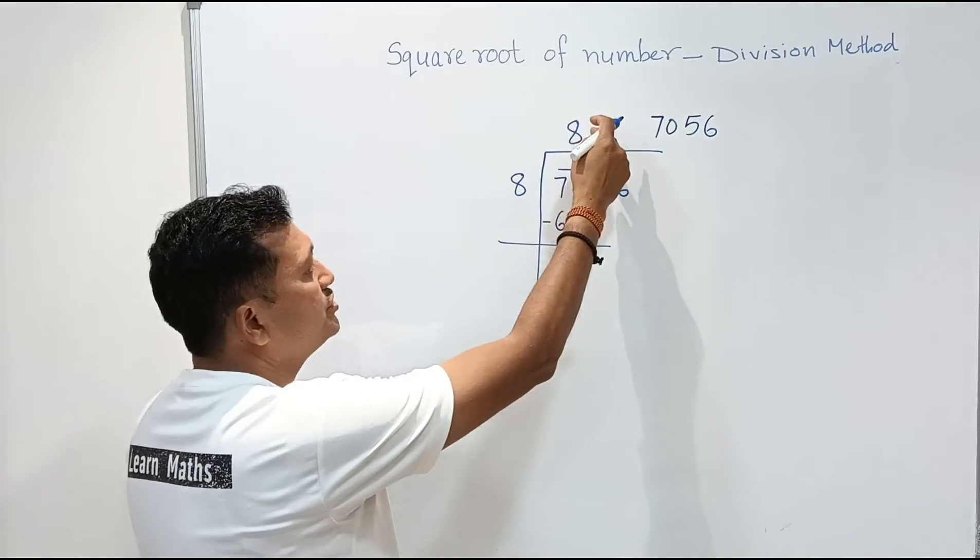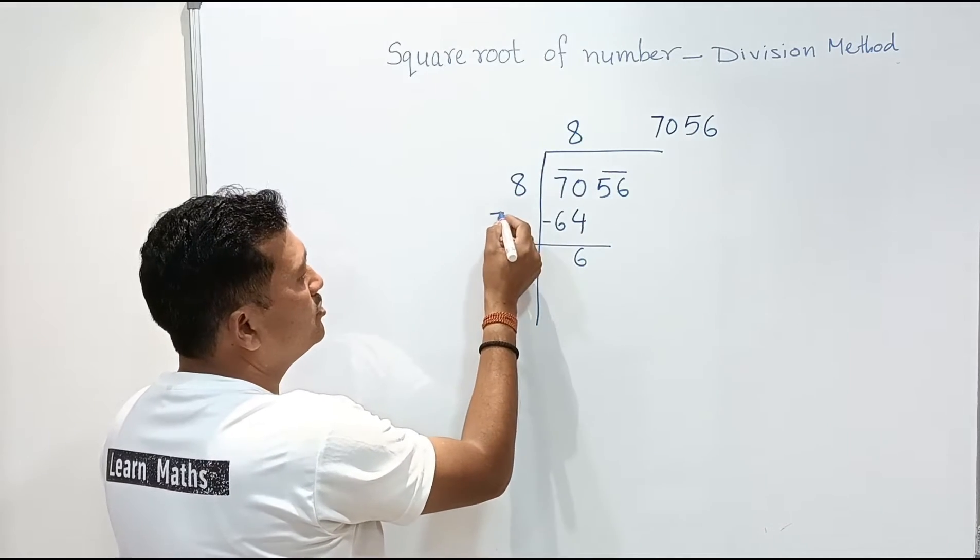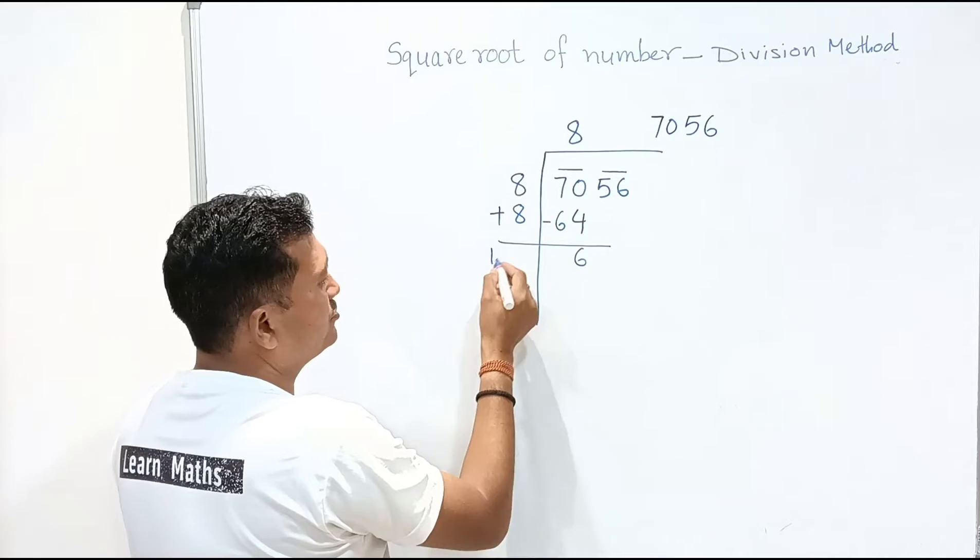Now this coefficient should be added to this divisor. Always we add this with the divisor. So we'll add over here 8 plus 8 is 16.